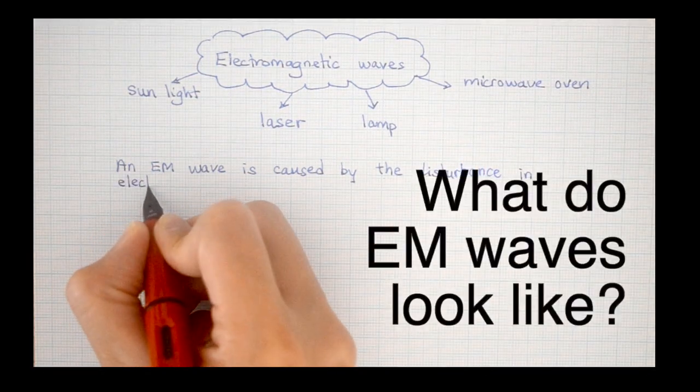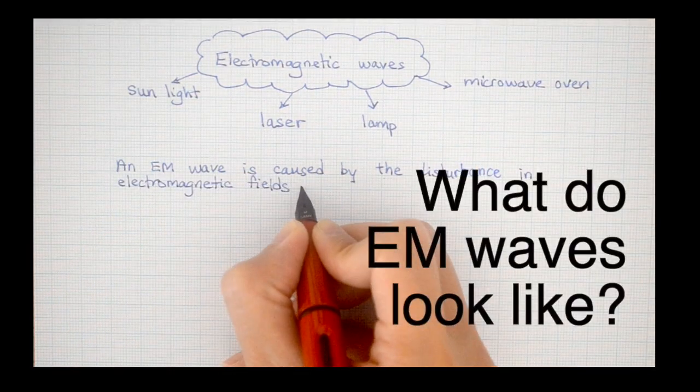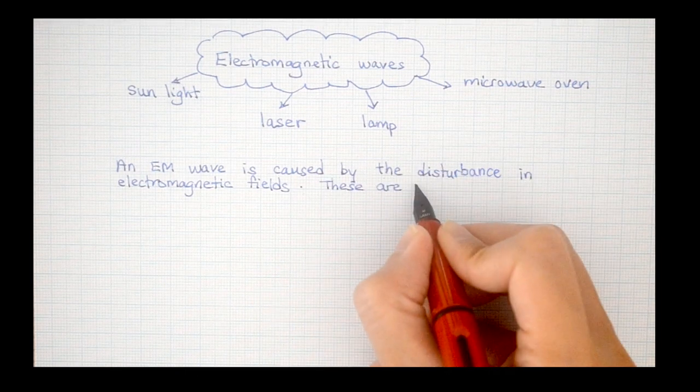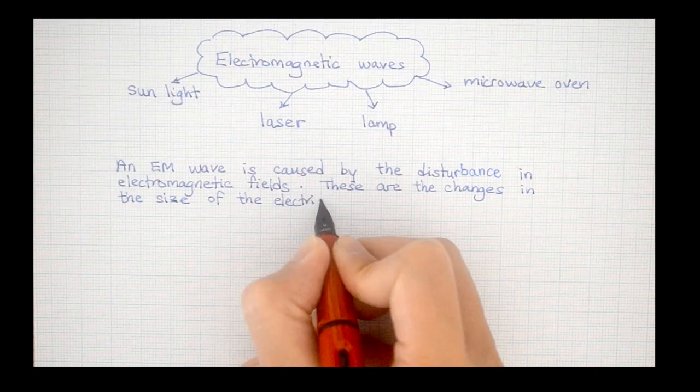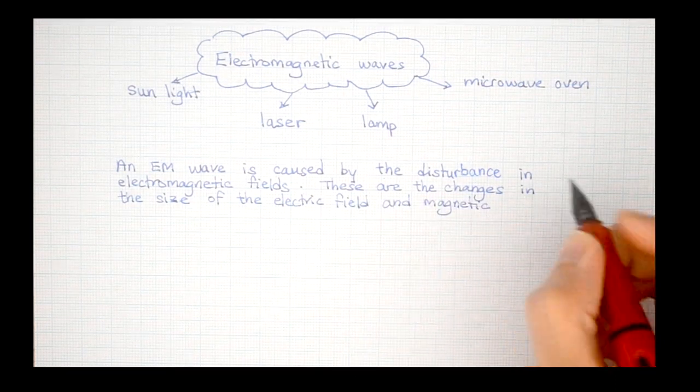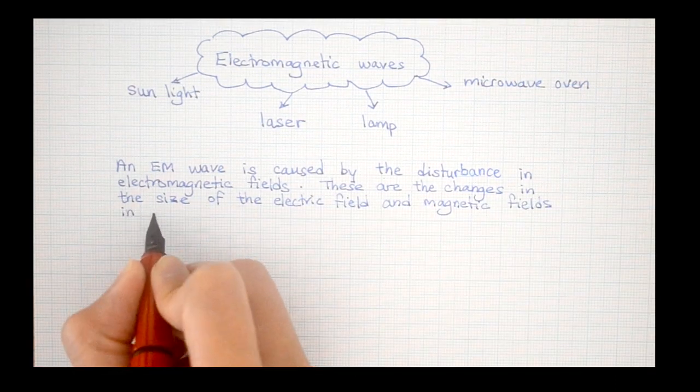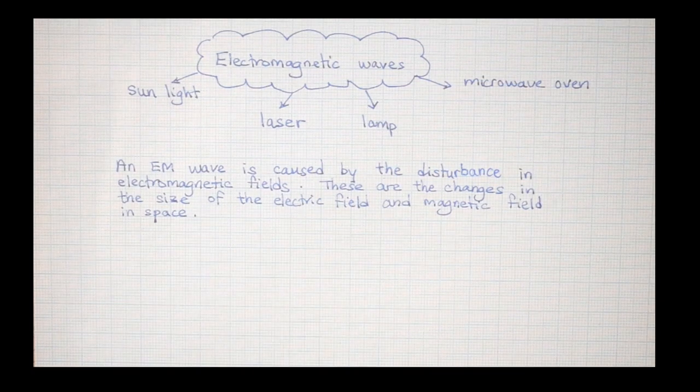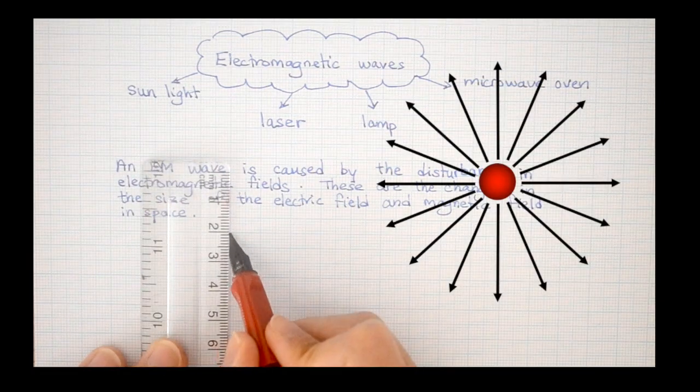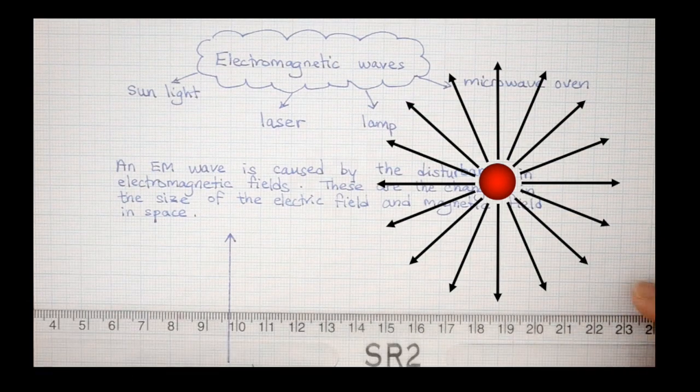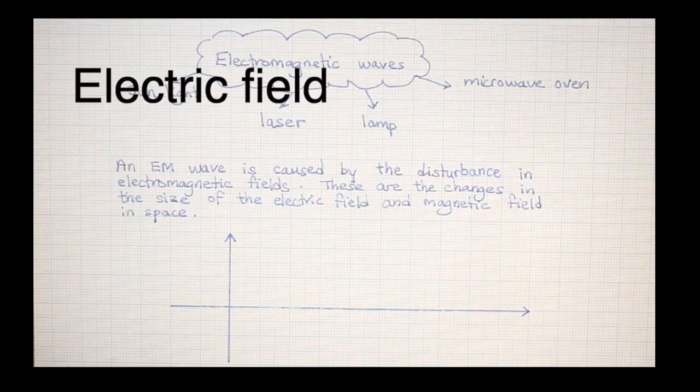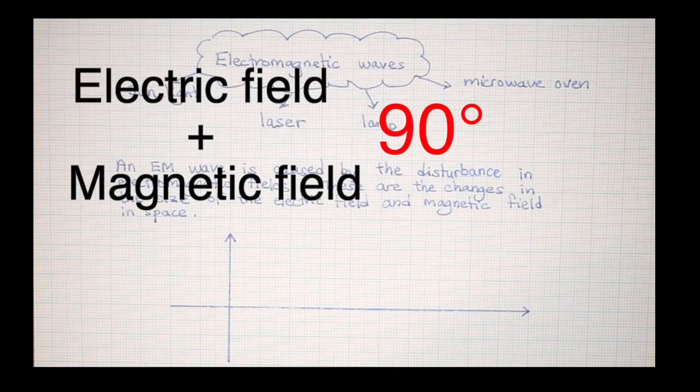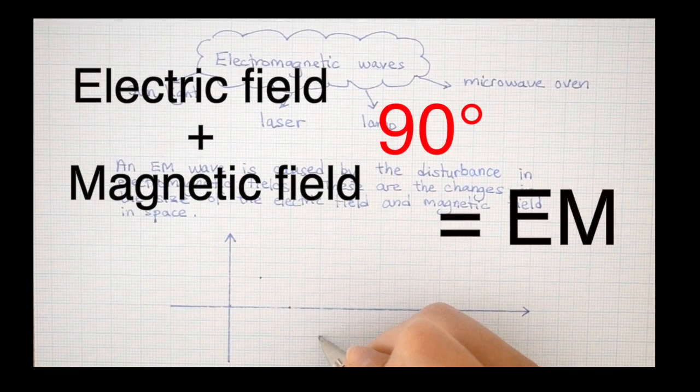Visualizing EM waves is slightly more complicated because we can't actually see its pattern like we can see, let's say, a ripple. But we can simplify the idea of EM waves by thinking of it as a combination of an electric field and a magnetic field. Recall that an electron flowing through a wire has an electric field, and a magnet has a magnetic field around it. Put them together, perpendicular to each other, then you get an EM wave.